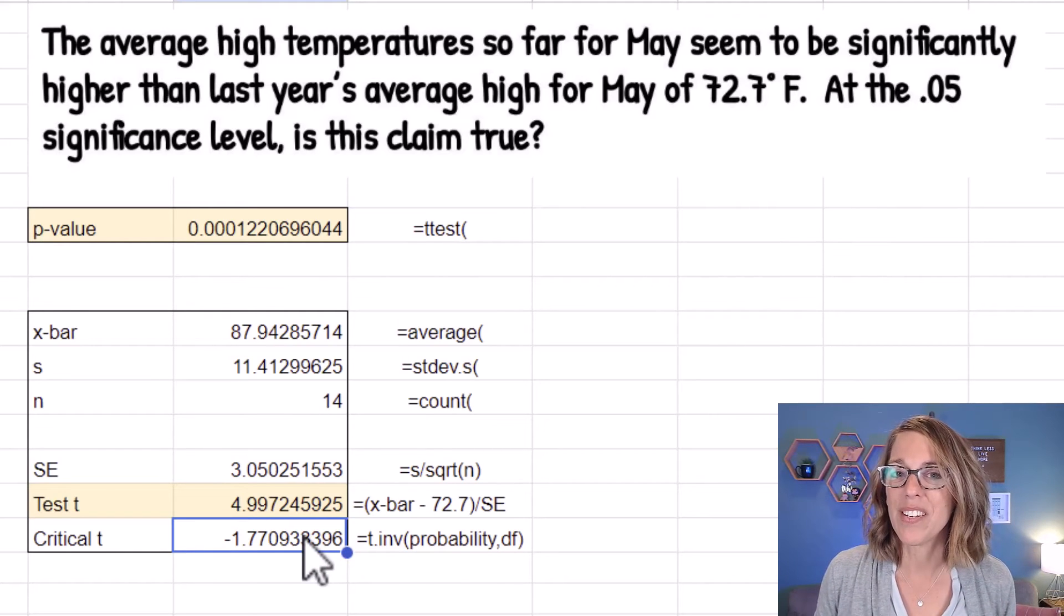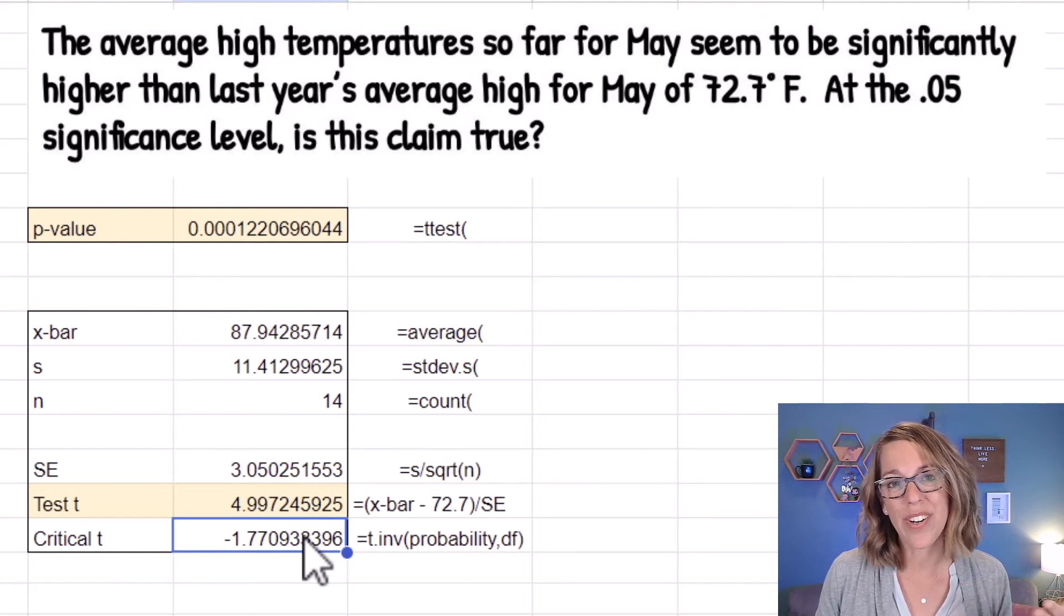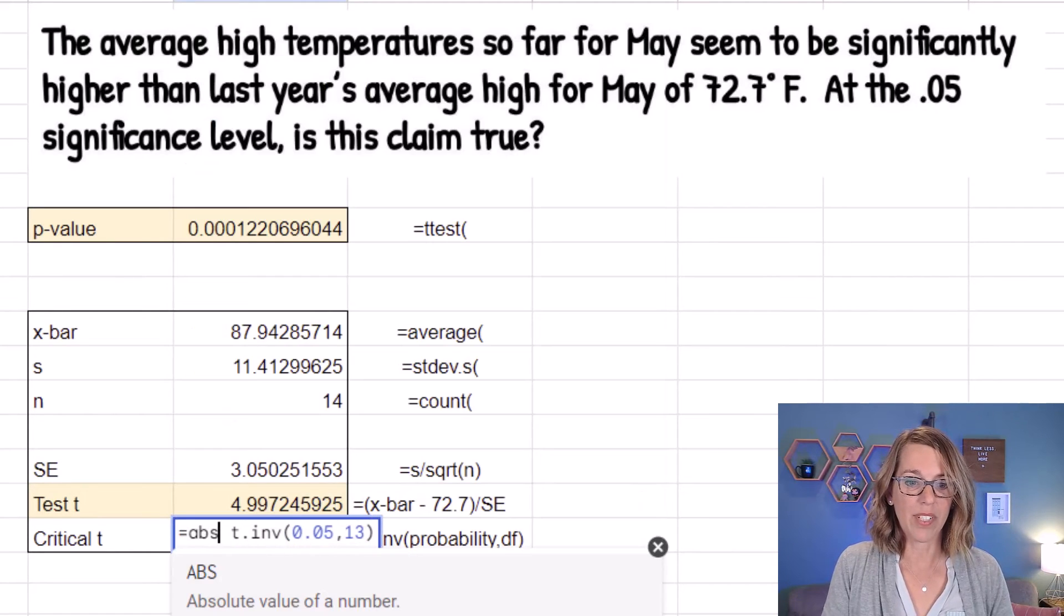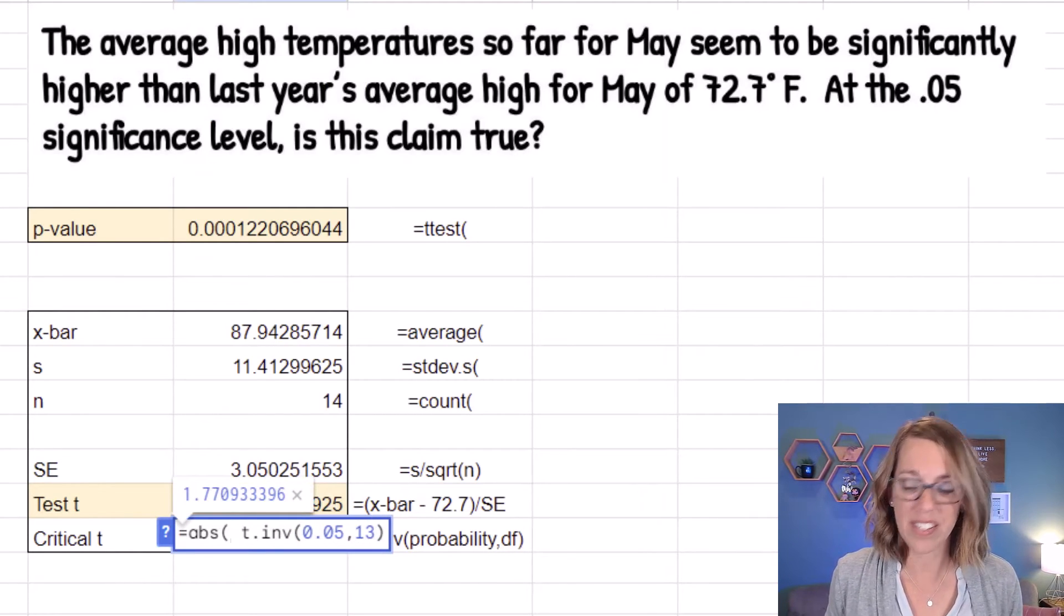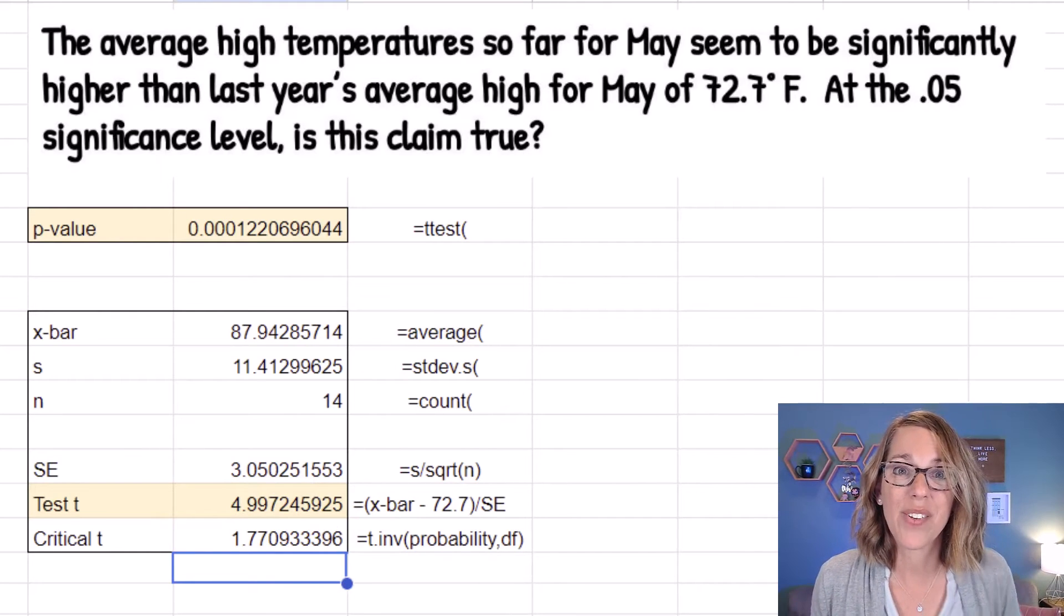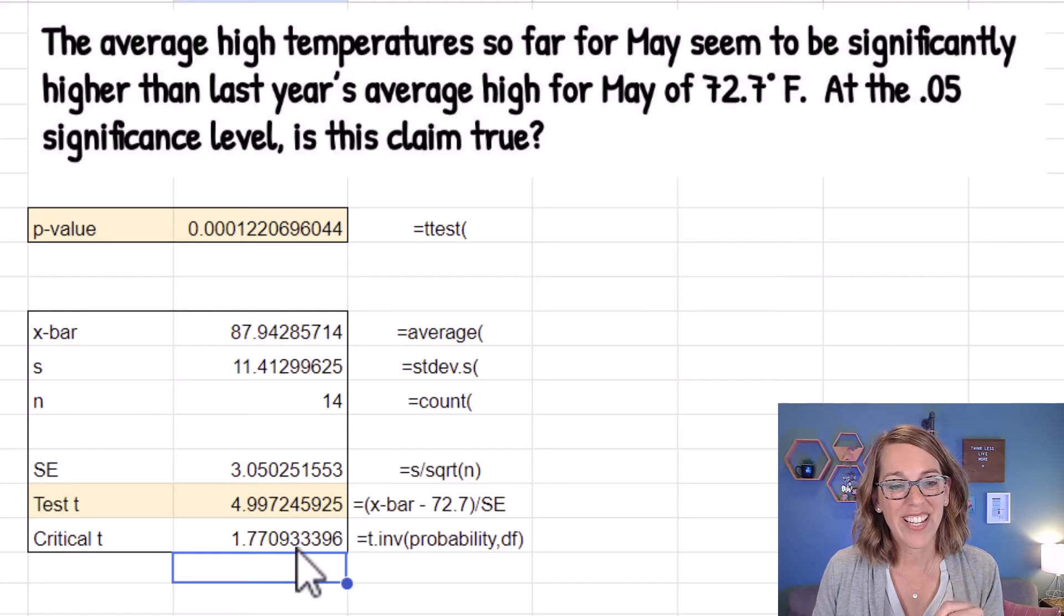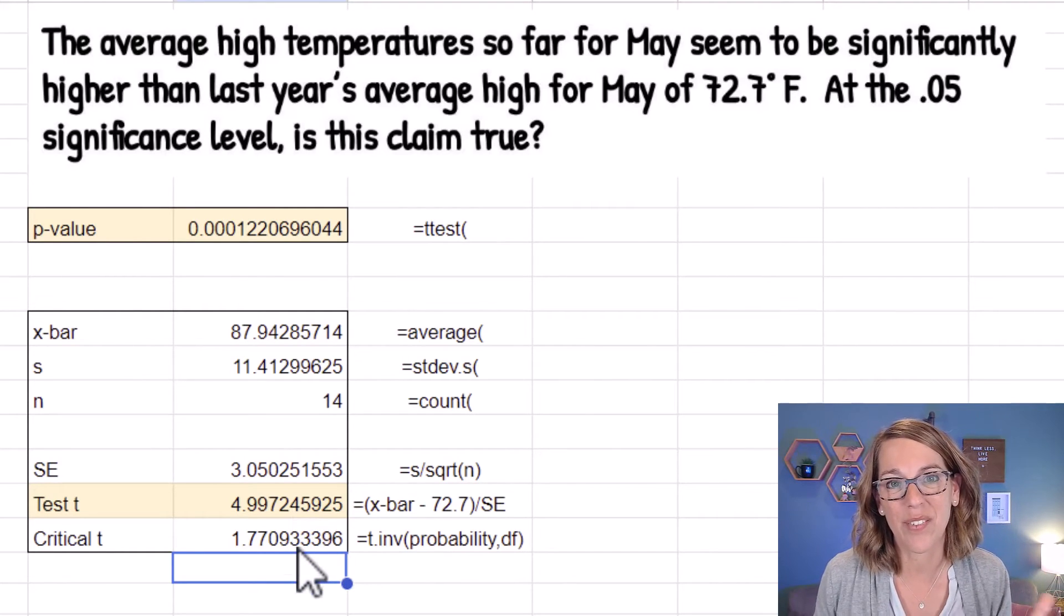Notice how it gives me the negative value. That's because it's just working from the left hand side. It doesn't know that this is a right tailed test. So I'm going to put in an absolute value and then parentheses to make that value positive matching my right tail. So I've got my test t and my critical t. Again, I can see that my test t is well beyond that critical value.